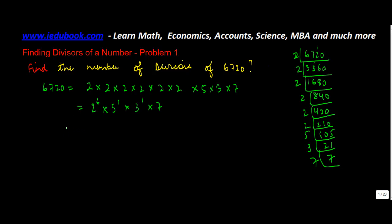Now, if you remember, the formula was that if you have a to the power m into b to the power n into c to the power o into d to the power p and so on, the number of divisors is equal to m plus 1, n plus 1, o plus 1, p plus 1, right?